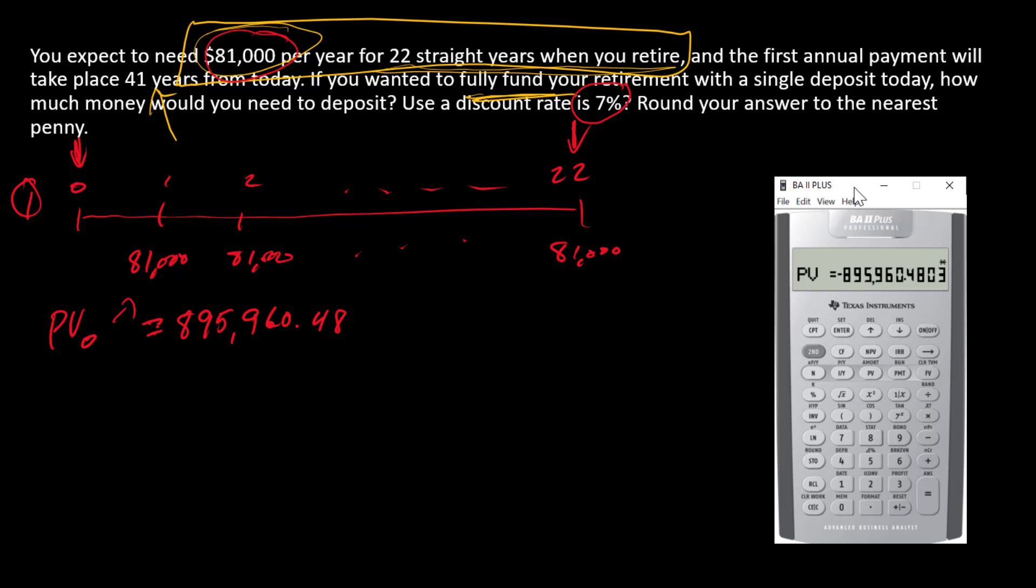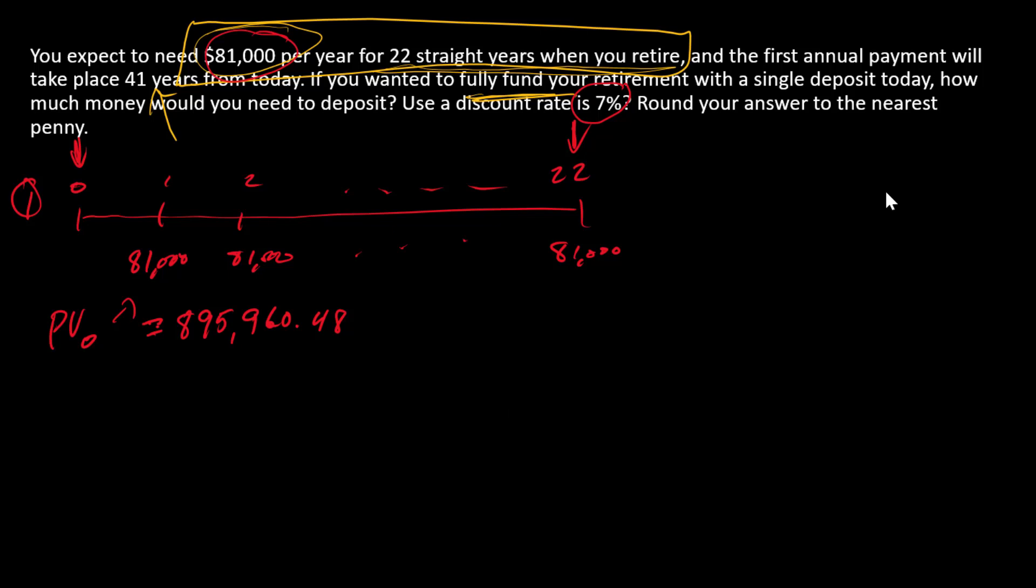Now let's go to step two. What are we actually looking for in this problem? We want to fully fund this with a single deposit today. We need a PV here. For this second part of the problem, this PV that we already created is going to become our FV, that's a new FV.